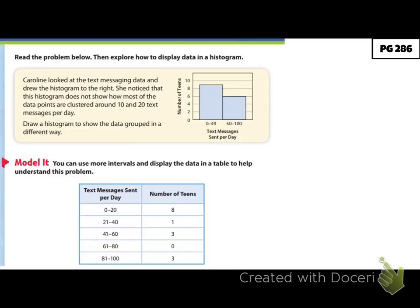Draw a histogram to show the data grouped in a different way — basically, take the same information but try to make each data point a little more clearly visible. In the model, you can use more intervals to display the data in a table. One important thing: if you notice, the intervals are all the same, ranging in groups of 20. When setting up histograms, your intervals must be the same amounts — you cannot have one interval be larger than another.